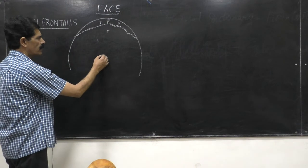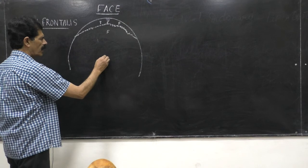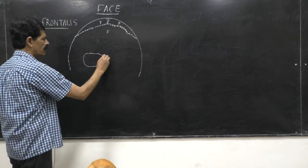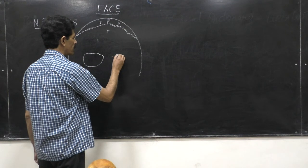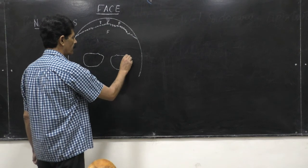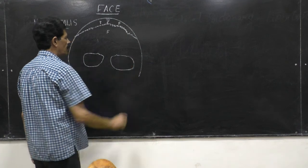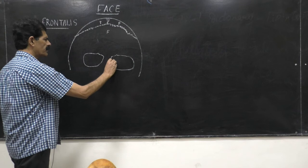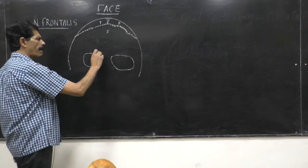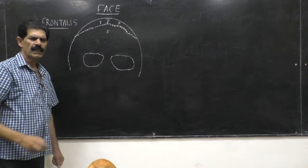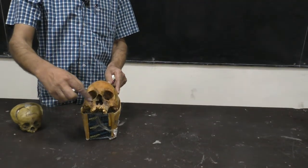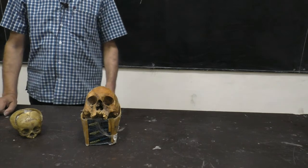In the lower part, in the midline on either side, there are bony sockets. These are called the orbits, in which the eyeball is fitted. The orbit has a superior border, medial border, inferior border, and lateral border. So that is the bony orbit — this is the socket for the lodgement of the eyeball.